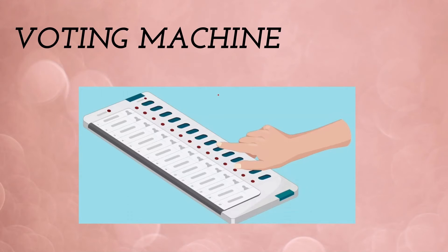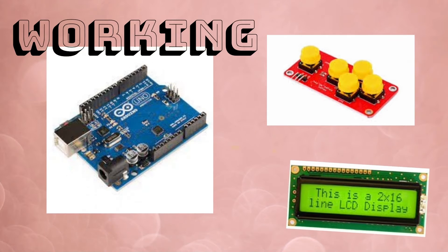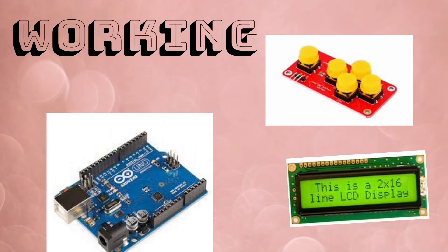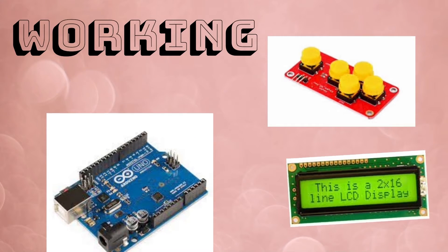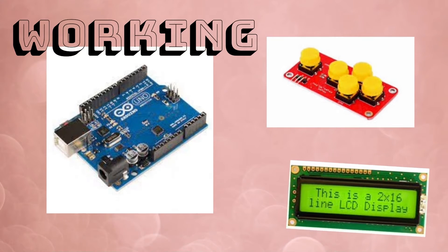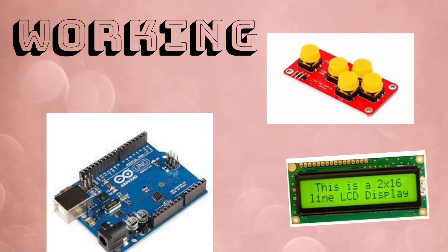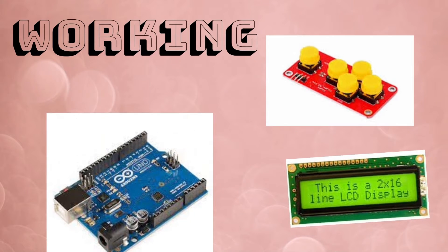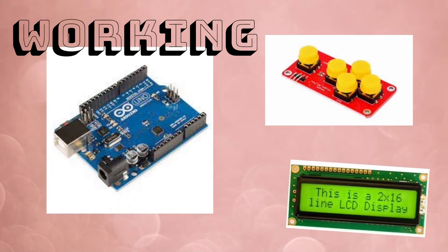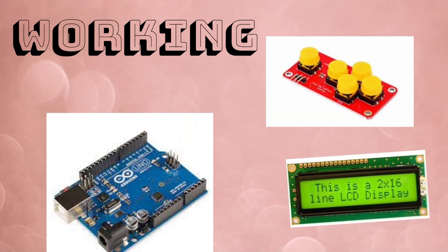The first step is initialization. The system is set up by connecting the Arduino board with input devices like buttons and a display. The display shows the list of candidates or the options available for voter interaction.